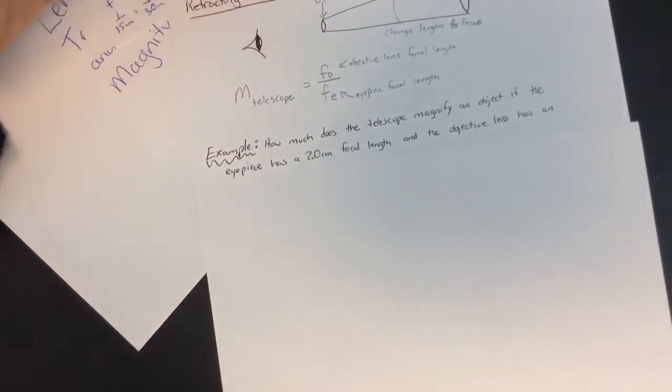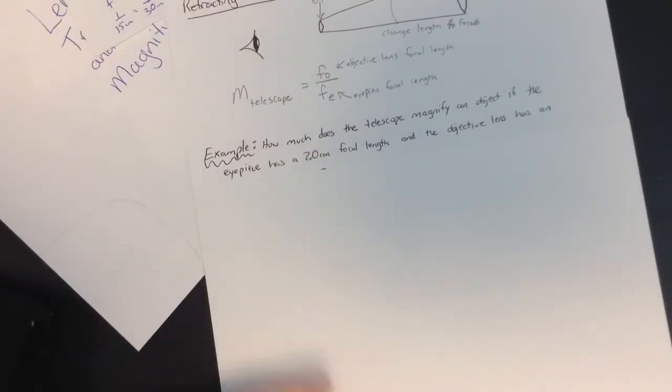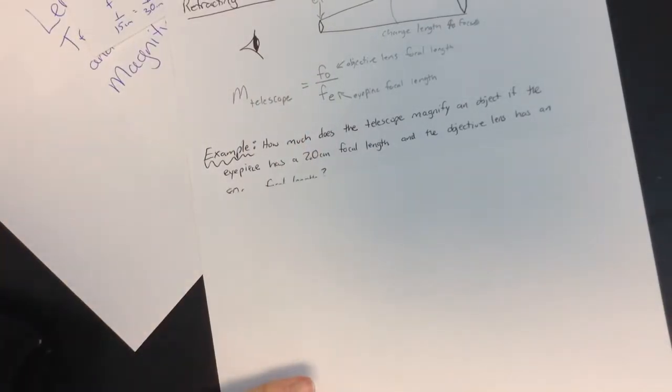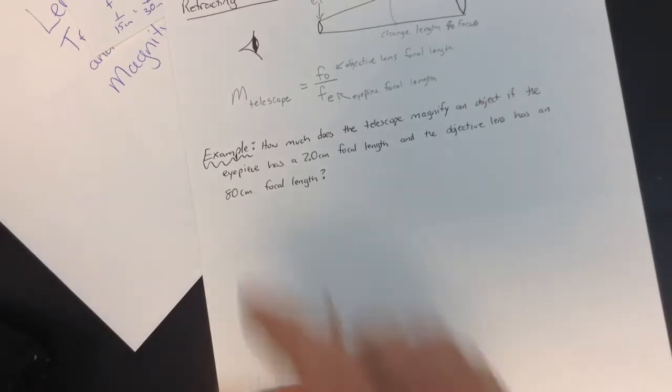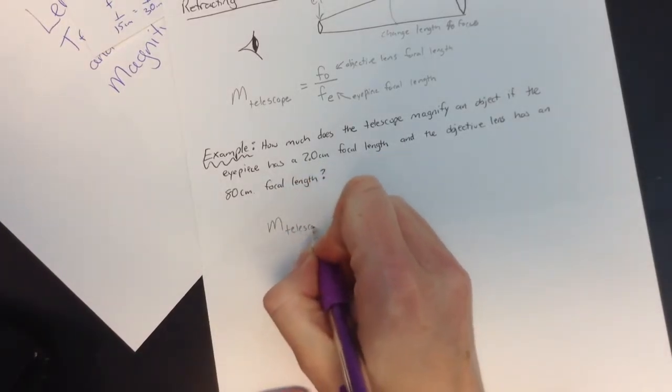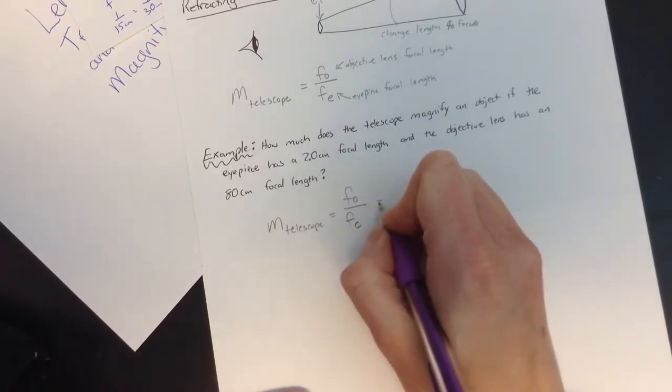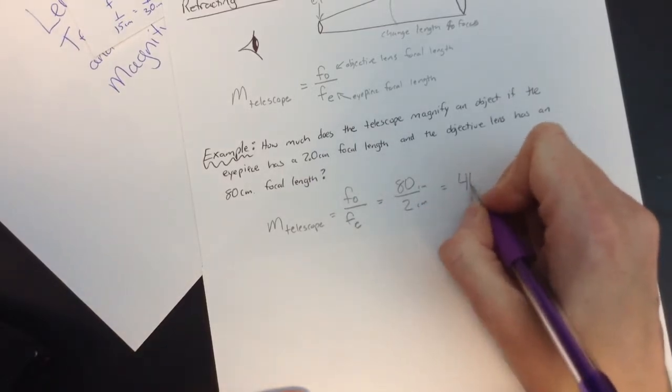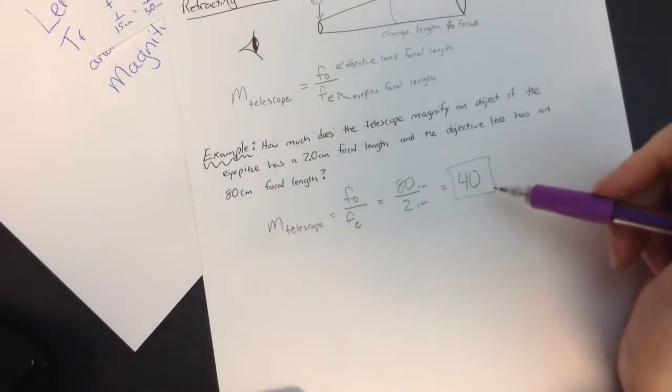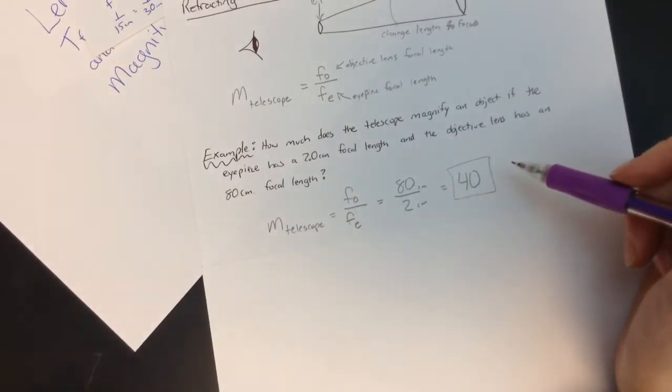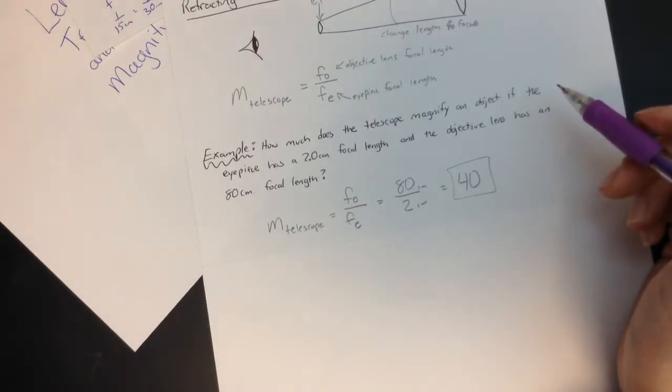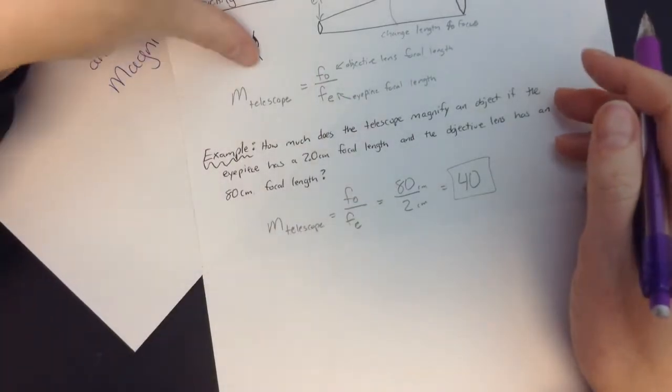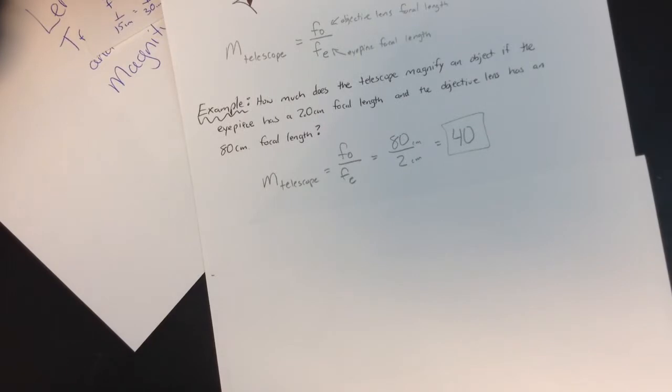And so we've got a quick example here. How much does the telescope magnify an object if the eyepiece has a 2.0 focal length and the objective lens has an 80 centimeter focal length? So we'll write the equation down. Magnification of the telescope is the objective lens divided by the eyepiece lens focal length. So we're going to put the 80 on top and the 2 on the bottom, one I can do on my head, thank goodness. So 40 is our magnification. Now if you're thinking, whoa, that's a big magnification, but imagine when you look at something stinking far away, it's incredibly tiny and if you can multiply it by 40, then you might even be able to tell what it is. When you're looking at stars, a lot of telescopes can get into the hundreds for the magnification so that you can see all the pieces.